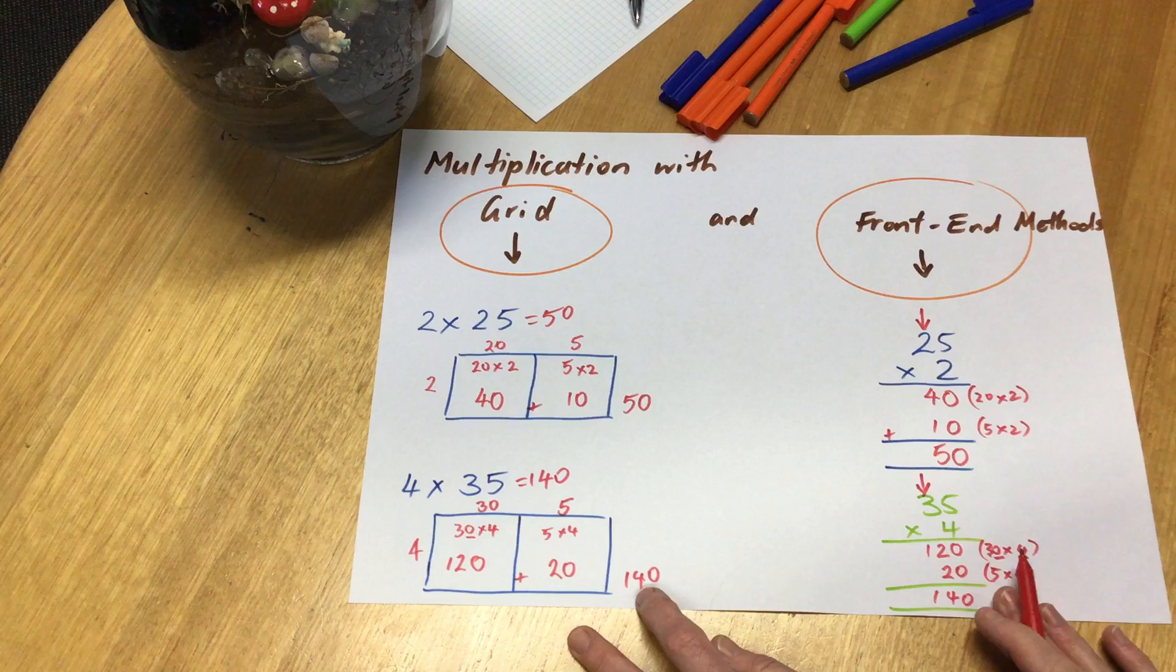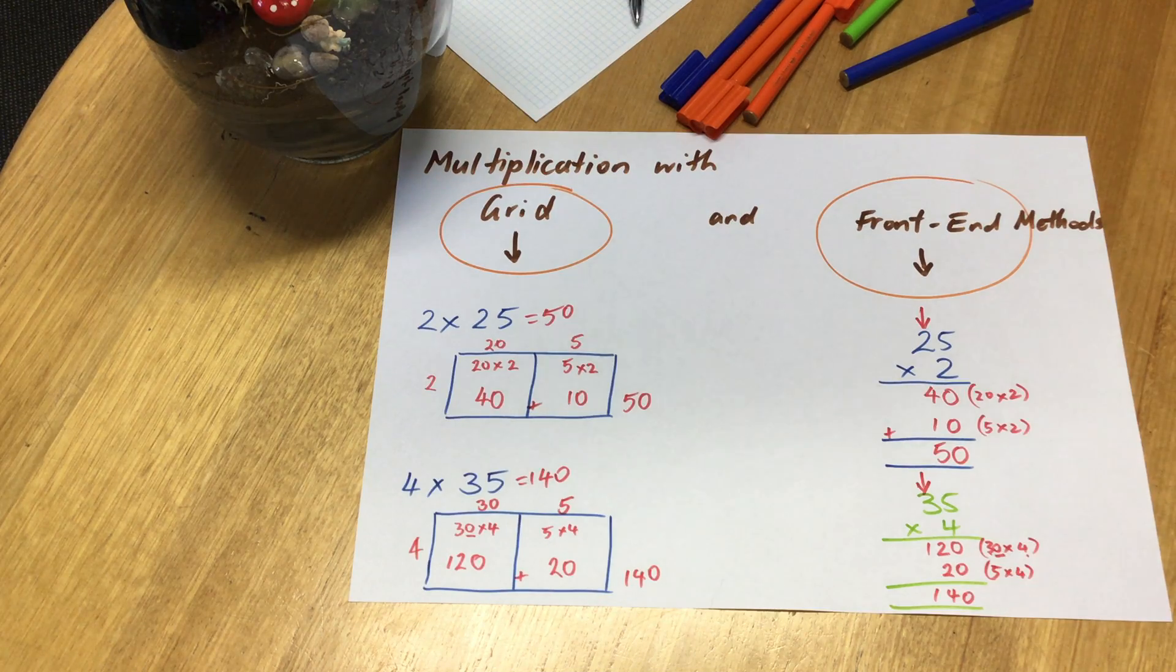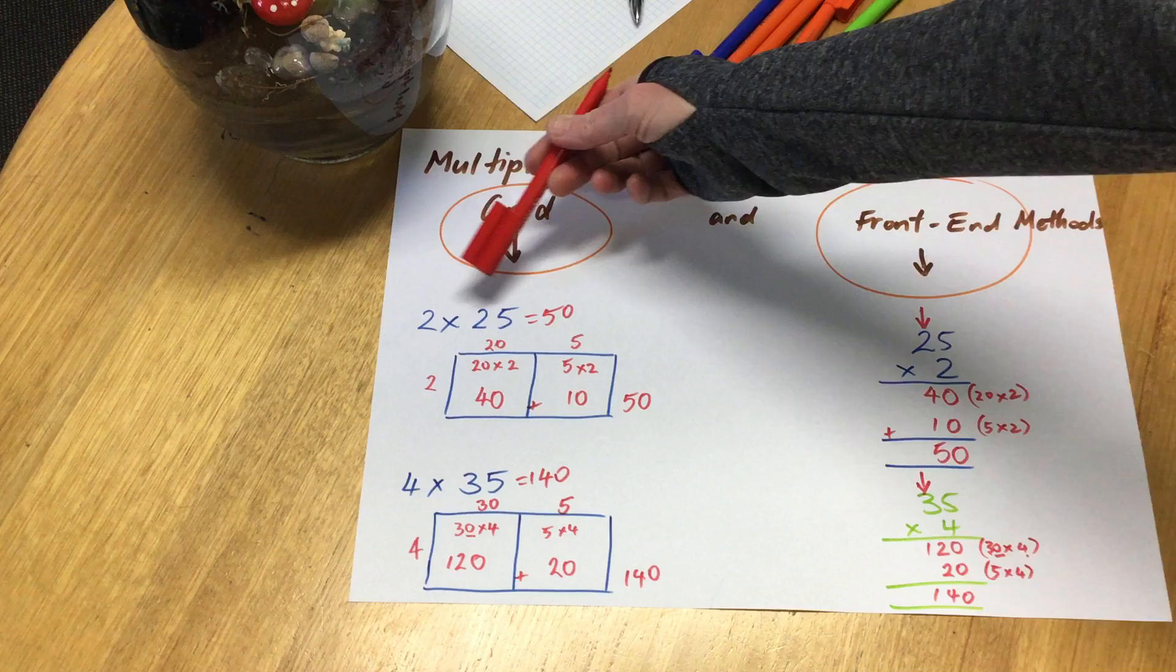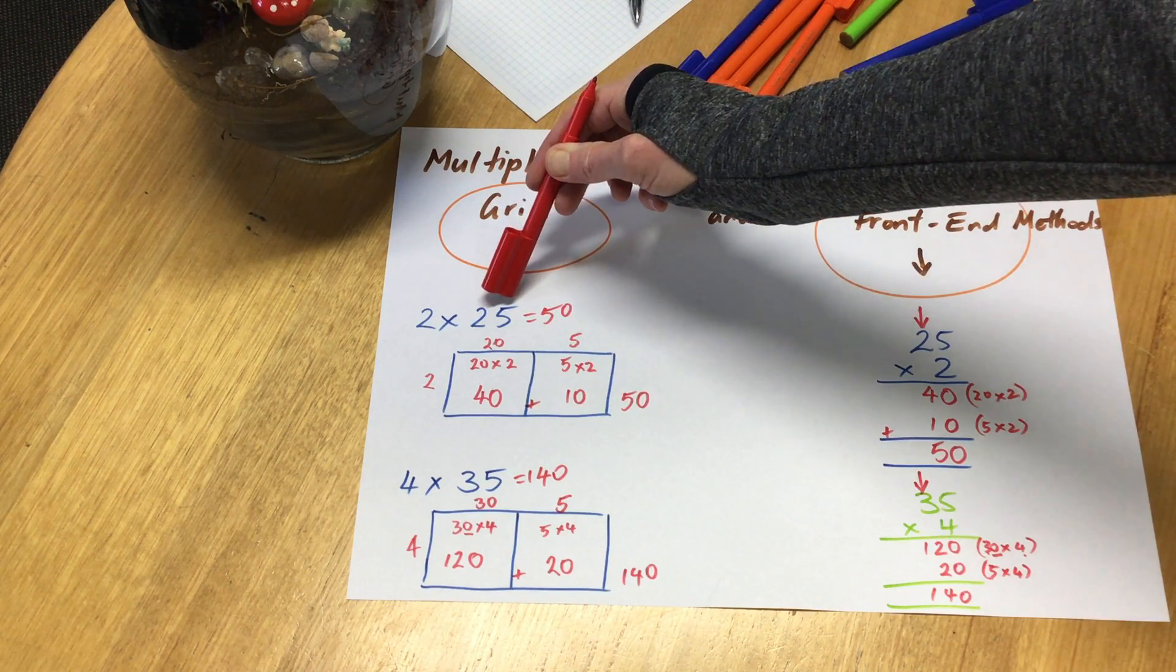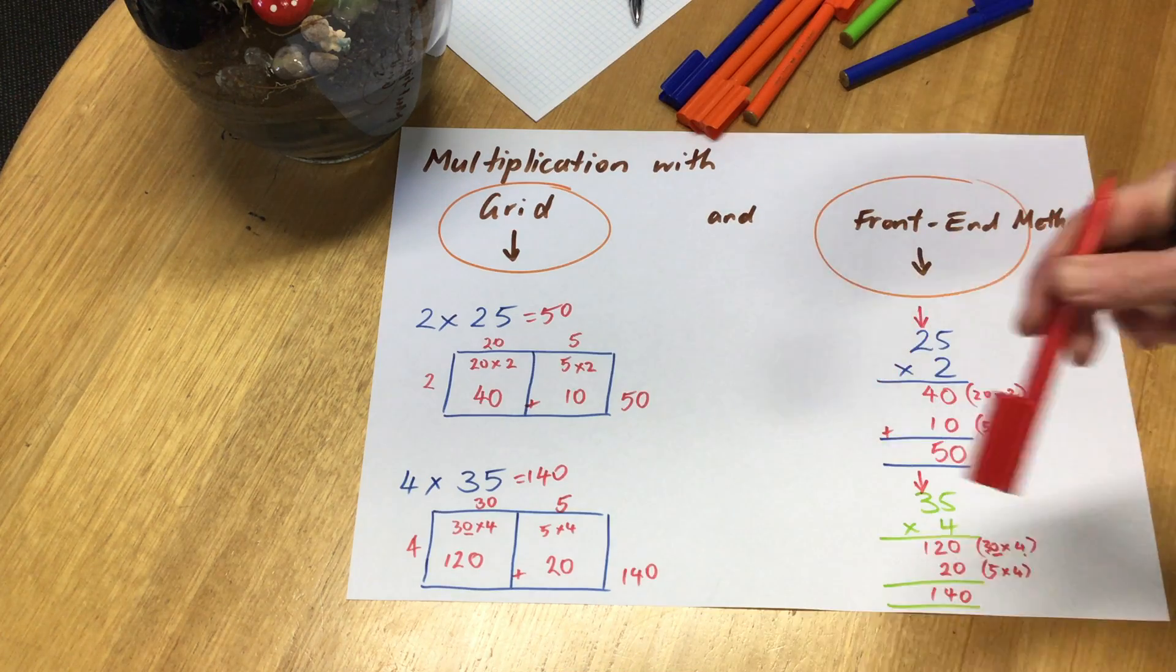Another good reason to learn two strong strategies is then you can do a double check. Have I got it right? If you want to do a check that way, absolutely. First up, I want you to practice multiplying a single digit by a 2-digit number with both methods.